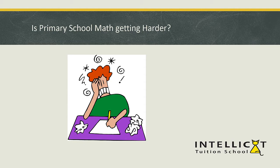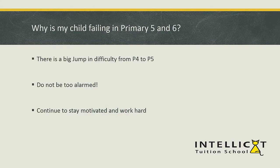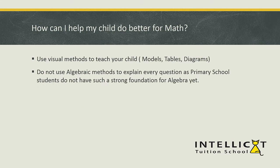Another trend I've noticed is that many parents who approach us will say that their children used to do well — scoring A-star in primary two, A in primary four — but when it comes to P5 and P6, they are suddenly failing everything. I would say that the jump in difficulty is highest from P4 to P5. So don't be overly alarmed if your child didn't do well, because it's quite normal.